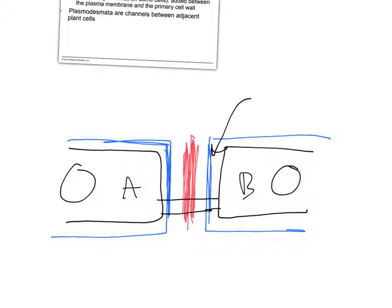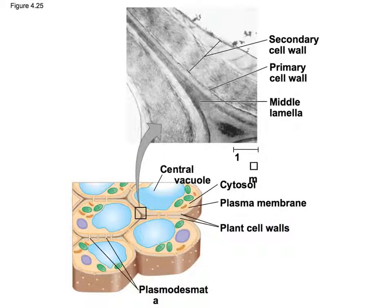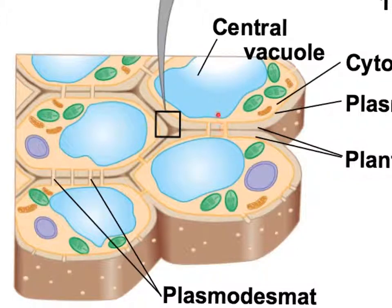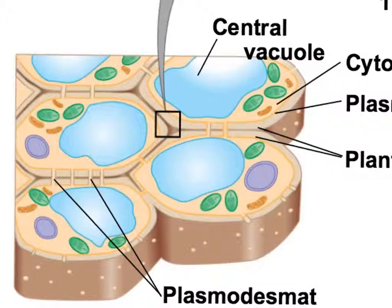There can even be extensions of the plasma membrane that go into the plasmodesmata — it's a channel between adjacent plant cells. Here's your secondary cell wall, pretty thick; your primary cell wall is a little thin; and then your middle lamella between cells. The plasmodesmata are the channels that run between cells. You can actually see that the plasma membrane of those cells is linked, so whatever's produced in this cell can float down and get into the other cell.